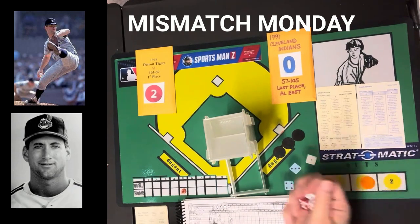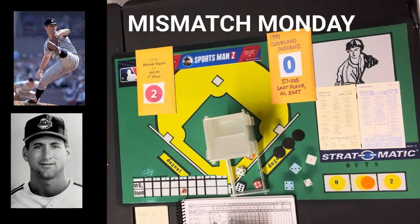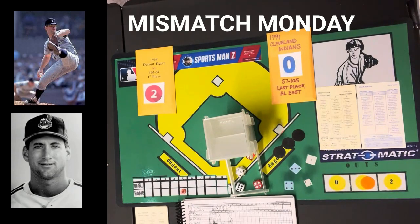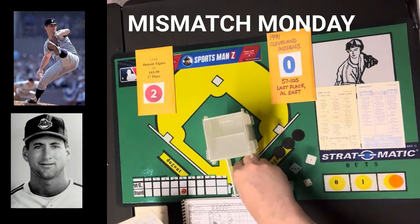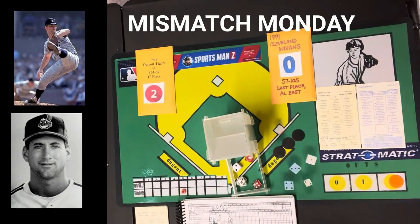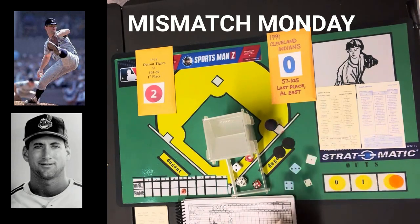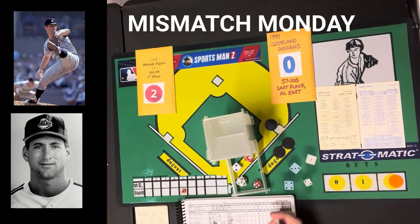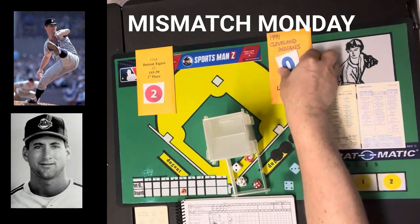Chris James gets a 6-8 — ground ball to short, shortstop rated 3, roll of 5 is an out. Alex Cole gets a 2-5 — fly ball to center, out. The Indians do score four runs and now lead 4-2.